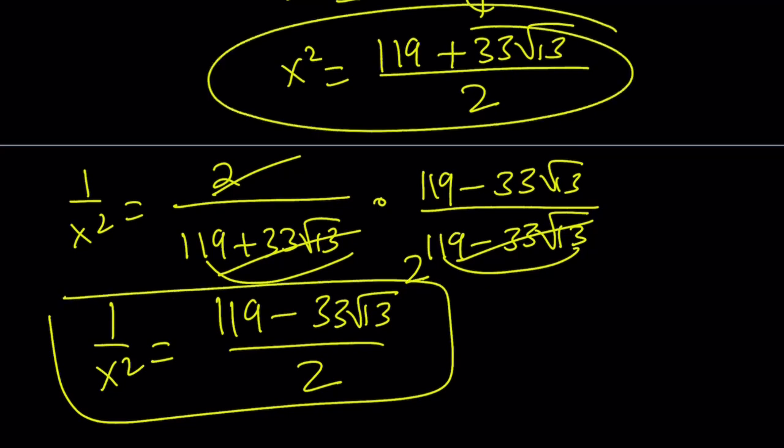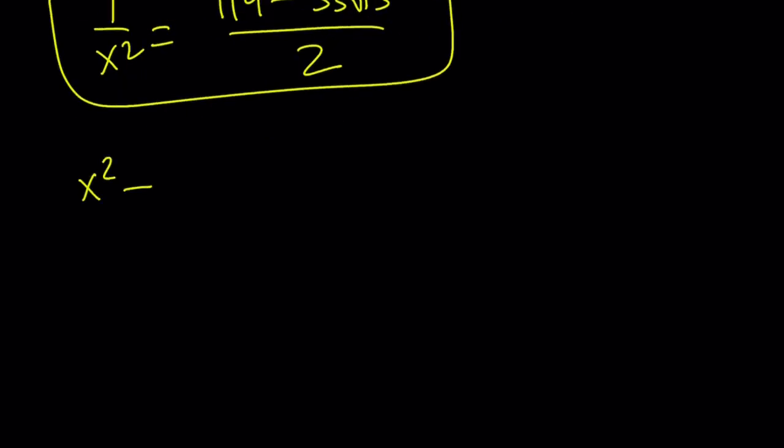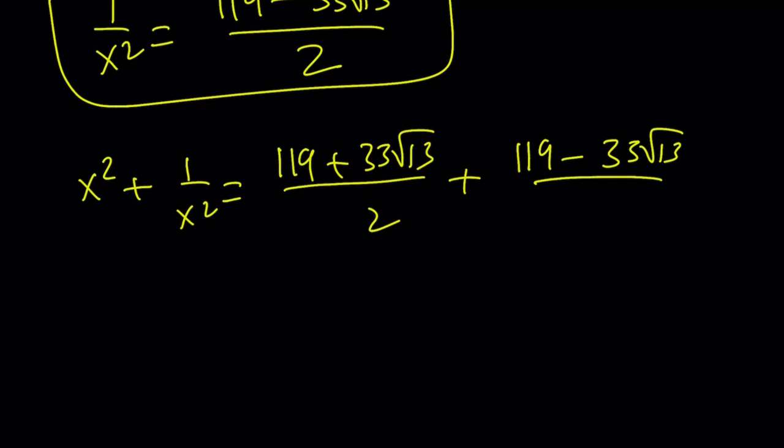That's my x squared, and I'm going to add those together. x squared plus 1 over x squared. I'm just going to add 119 plus 33 root 13 over 2 plus 119 minus 33 root 13 over 2. And when I add these up, 33 root 13 is going to cancel out. I'm going to add 119 plus 119, which is 2 times 119, divided by 2 is just going to be 119.